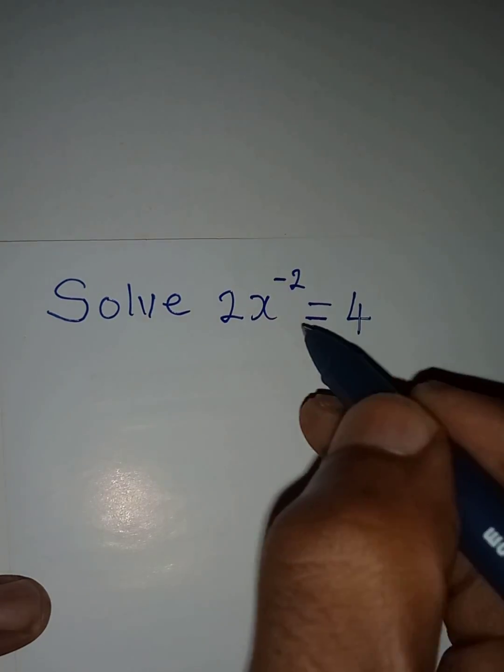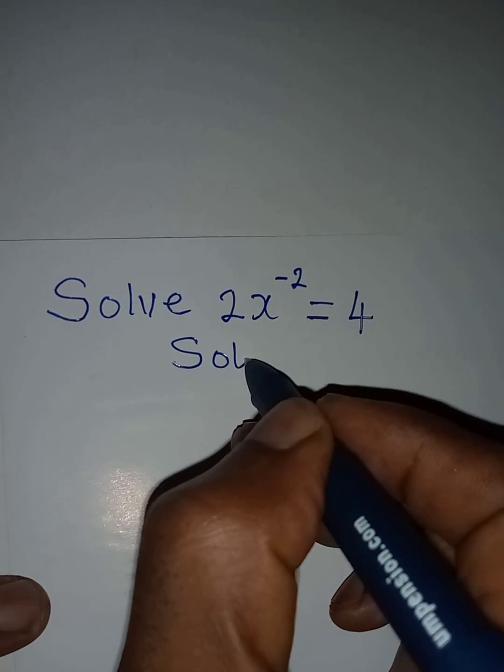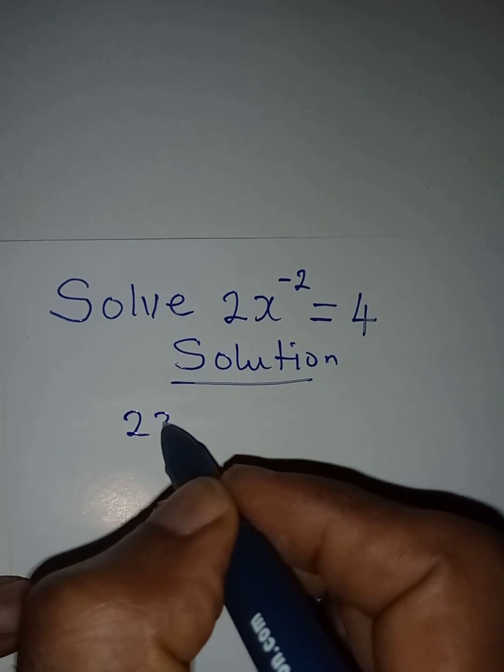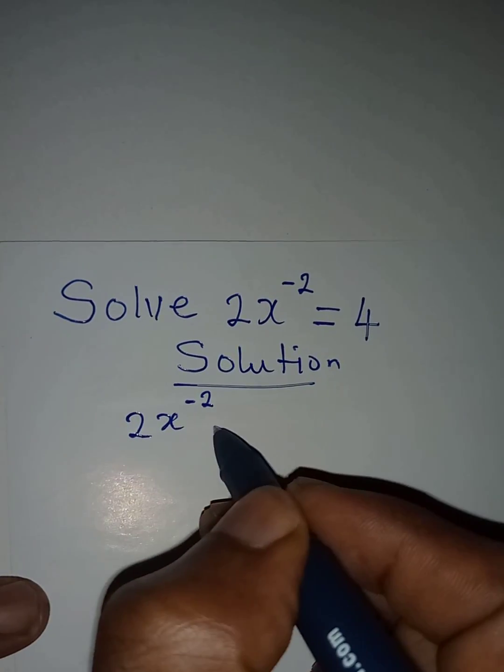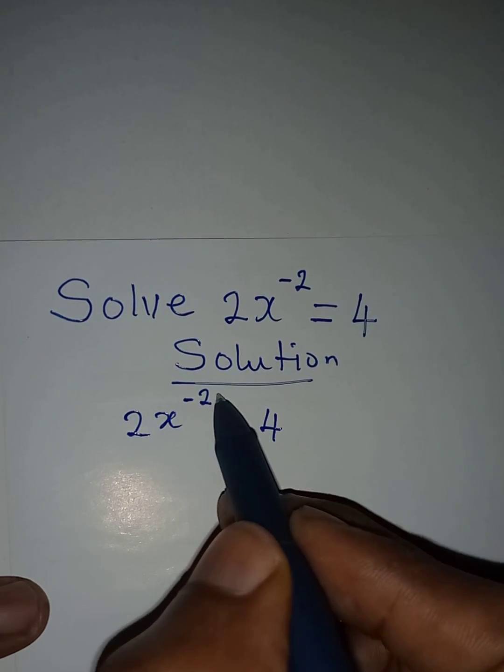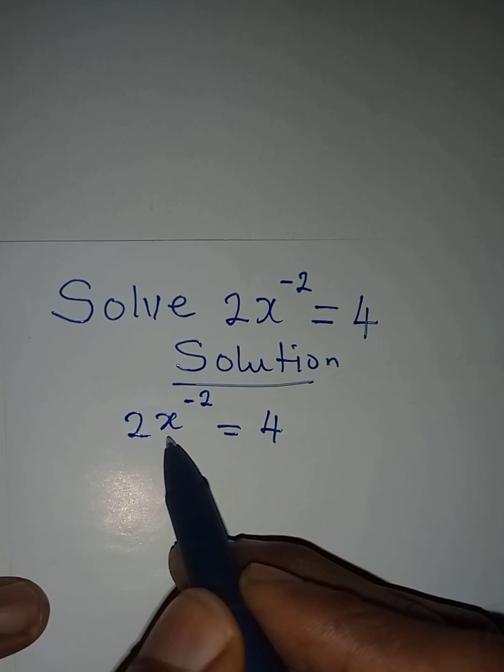Hello everyone, let us solve this simple problem. We have 2x to the power of negative 2 equal to 4. One thing you should note is that the power negative 2 here is for x alone.